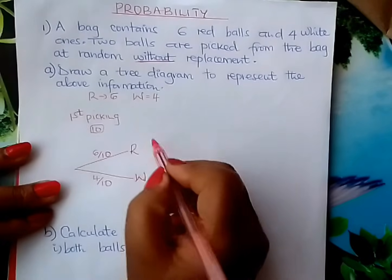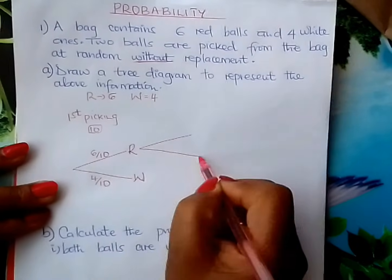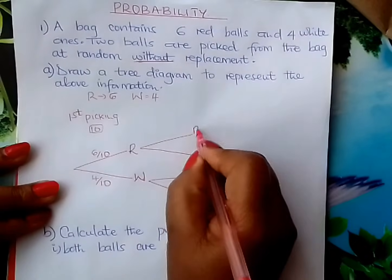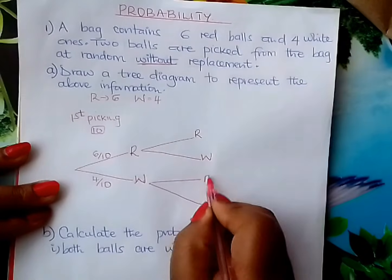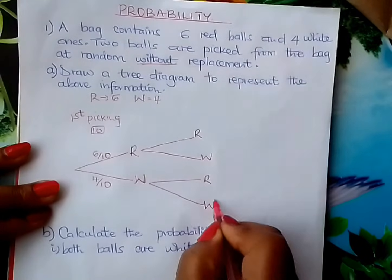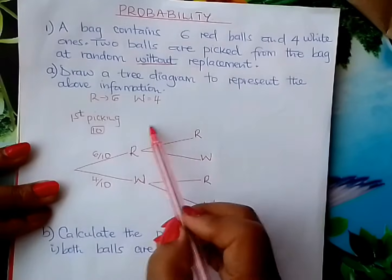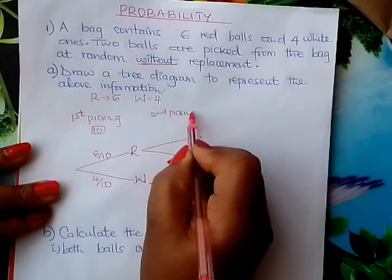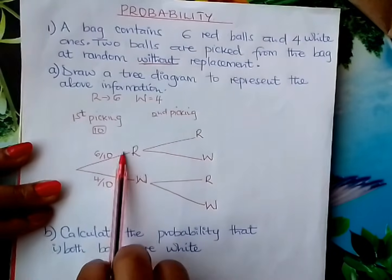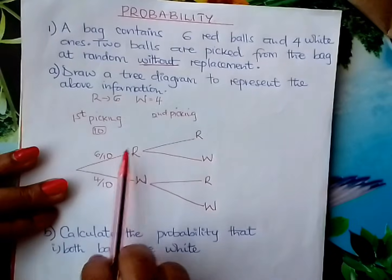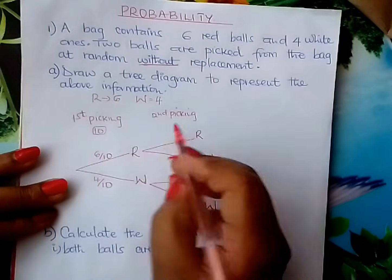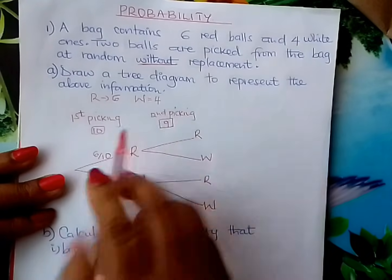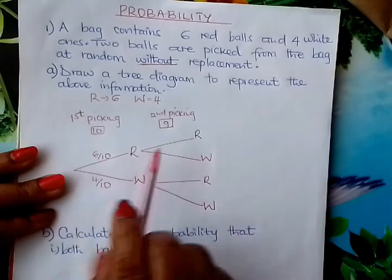We go to the second picking. Put more branches — red and white here, red and white there. Remember, once we pick the first one we are not replacing it. So during the second picking, you will have how many balls in total? You will have 9. They were 10; you picked one and put it aside, so you now have a total of 9.